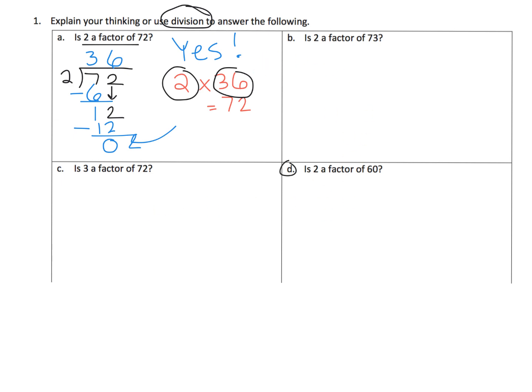Oh, let's do D. Is 2 a factor of 60? Well, if you divide and get a remainder of 0, that means the answer is yes. And in this case, it is going to be yes, because 2 goes into 6 3 times.